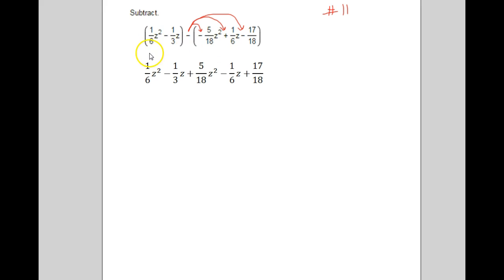Well, both sets of parentheses. We don't really need this set of parentheses, it's just showing that this is an expression minus another expression, but to get rid of this second set of parentheses, we do have to distribute the negative. So notice 5/18 z squared, it was negative and now it's positive. Plus 1/6 z, now it's minus 1/6 z, and minus 17/18, now plus 17/18 because there was a minus sign out here. If it had been a plus sign, we wouldn't have to do that.